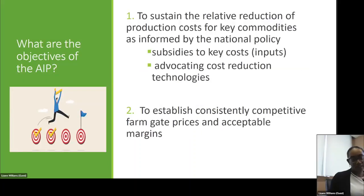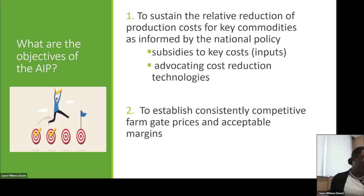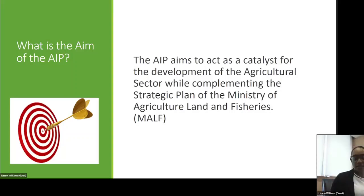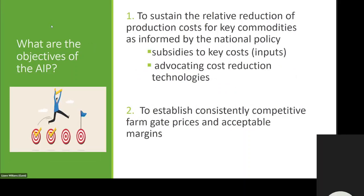What is the aim of the AIP? The AIP aims to act as a catalyst for the development of the agriculture sector while complementing the strategic plan of the Ministry of Agriculture, Land and Fisheries. The aim of the AIP is to help reduce the food import bill, to increase our agricultural contribution to the reduction of GDP, generating employment and promoting business development in agro processing.